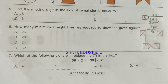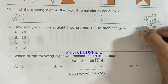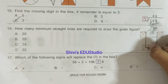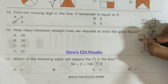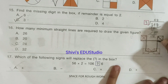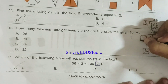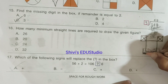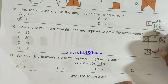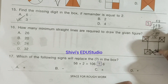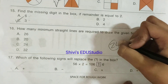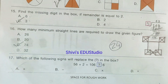Question number 16: How many minimum straight lines are required to draw the given figure? Counting all the lines: 1, 2, 3, 4, 5, 6, 7, 8... up to 24 total straight lines. Option C is the correct option.